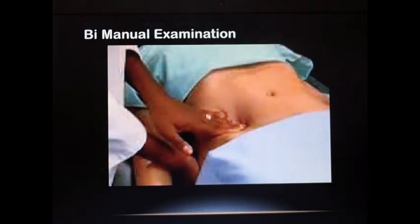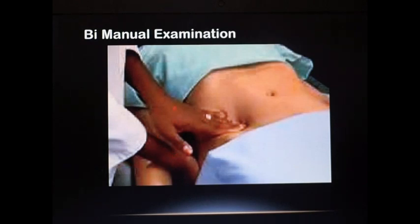Now let's look at palpability of a normal kidney. In a normal-built individual, the kidney is not palpable, but in lean individuals we can palpate the kidney. The procedure to palpate the kidney is called bimanual examination, where one hand is placed over the anterior abdominal wall and the other hand is placed over the loin, and gentle pressure is exerted during deep inspiration. The lower part of the kidney can be felt.